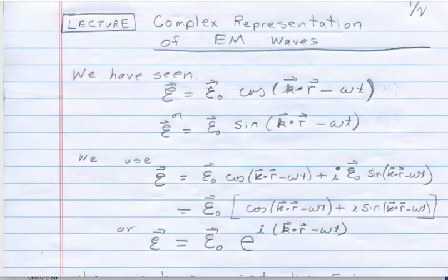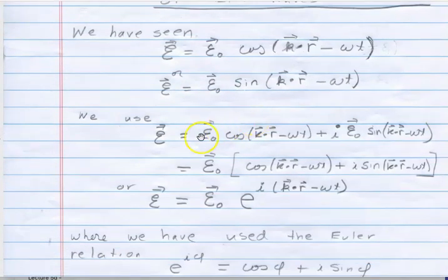We could do some manipulation and add these two. I'll take the real part as the cosine and the sine I'll put in the imaginary part. So I'll have a complex electric field where i is the square root of minus one, and E here now is a complex vector.